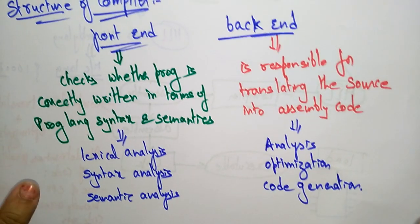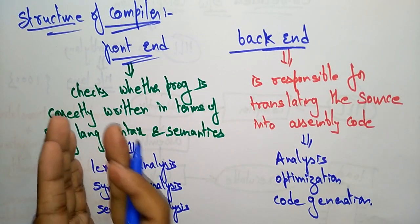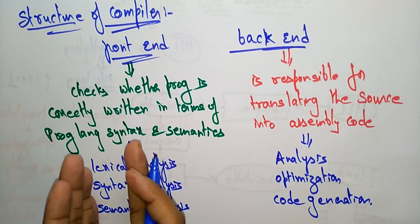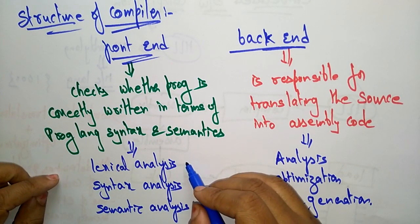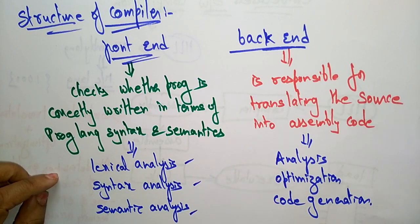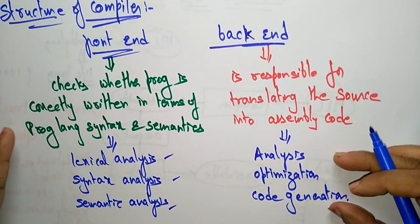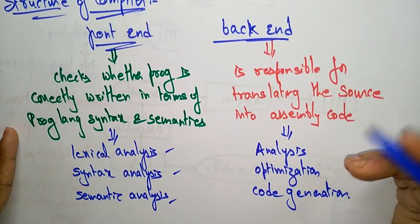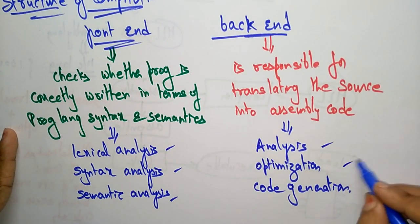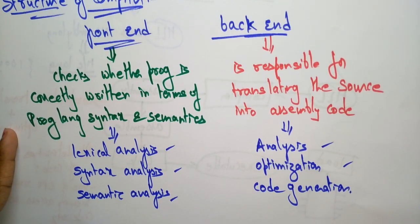So this is the structure of the compiler. A compiler consists of a front end and a back end. The front end checks whether the program is correctly written in the programming language using lexical analysis, syntax analysis, and semantic analysis. The back end is responsible for translating the source code into assembly code by analyzing, optimizing, and using code generation techniques.